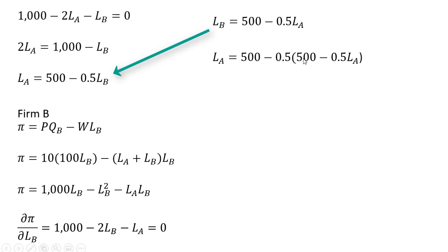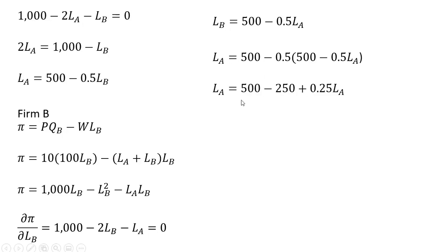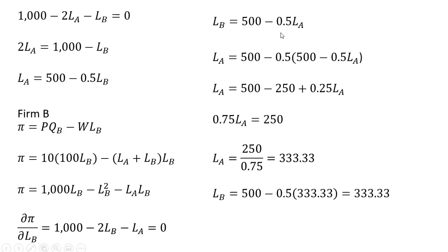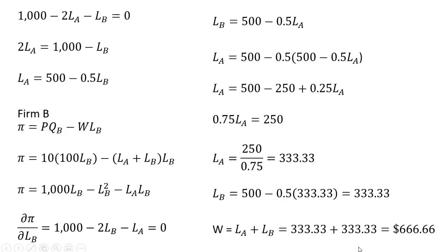So we have the L subscript B equation and the L subscript A equation. Substituting one into the other and solving for L subscript A: 500 minus 250 leaves us with 250, and subtracting 0.25L from both sides, we have 0.75L on the left-hand side. After division, firm A should hire a little over 333 workers. Plugging 333.33 into firm B's reaction function, firm B will also hire 333.33 workers. The equilibrium wage in the market is $666.66.